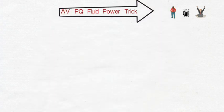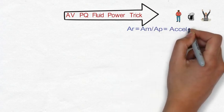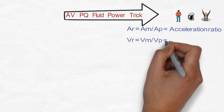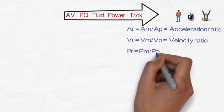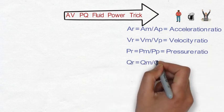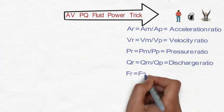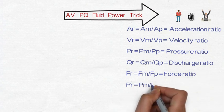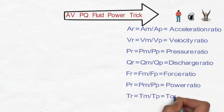Now here all the capital letters we have to extract. Starting from A, that is nothing but the acceleration ratio. V, VR equals nothing but the velocity ratio. And similarly P, that is nothing but the pressure ratio, that means Pm by Pp. Q, that is nothing but the discharge ratio, Qm by Qp. Now F, nothing but the force ratio, that is Fm by Fp. Now P, nothing but the power ratio, that is Pm by Pp. And T is Tm by Tp, torque ratio.